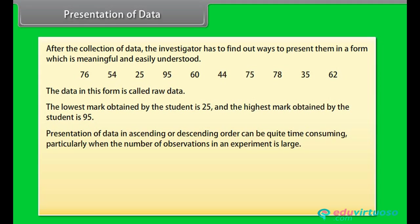Presentation of data in ascending or descending order can be quite time-consuming, particularly when the number of observations in an experiment is large. This is the ascending order. Now we can clearly see that the lowest marks are 25 and the highest marks are 95.